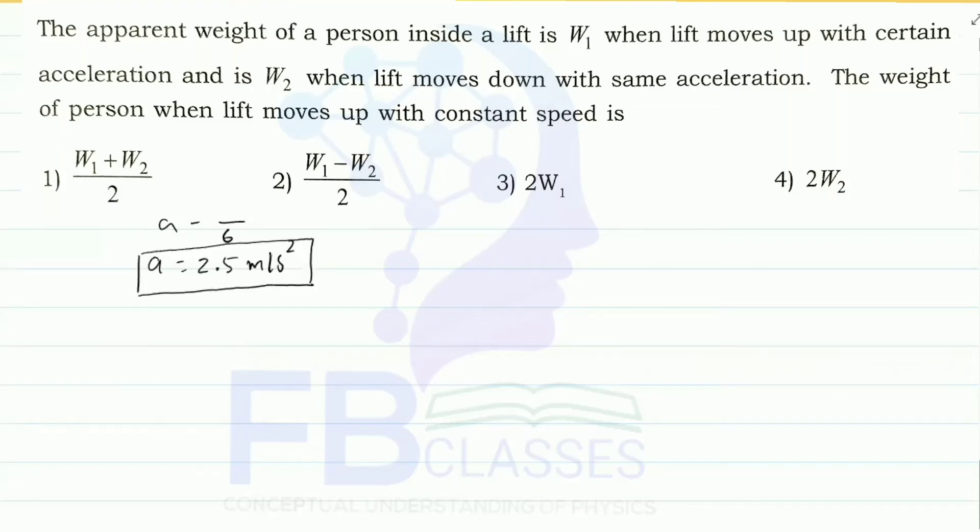I'm going to read the next question. The apparent weight of a person inside a lift is W1 when the lift moves up with a certain acceleration and is W2 when the lift moves downward with the same acceleration. The weight of the person when the lift moves with constant speed is? There are four options given.